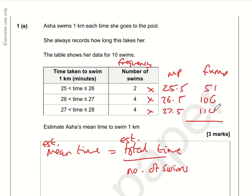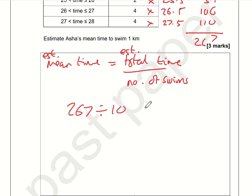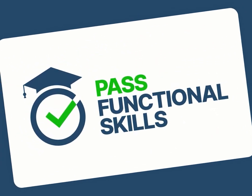We want the total time, which is all of these subtotals added together: 51 plus 106 plus 110 equals 267. So the estimated mean is the estimated total, which is 267, divided by the number of swims, which is 10. That is 26.7 minutes. And that is the end of section A.